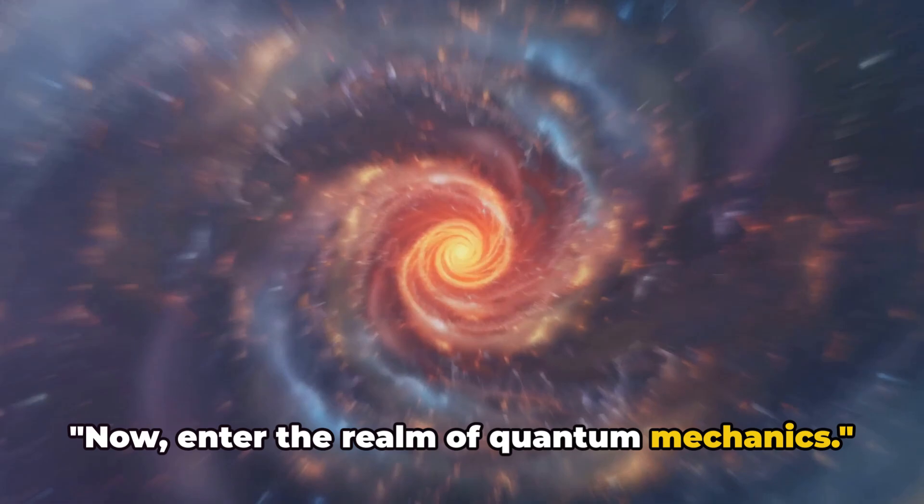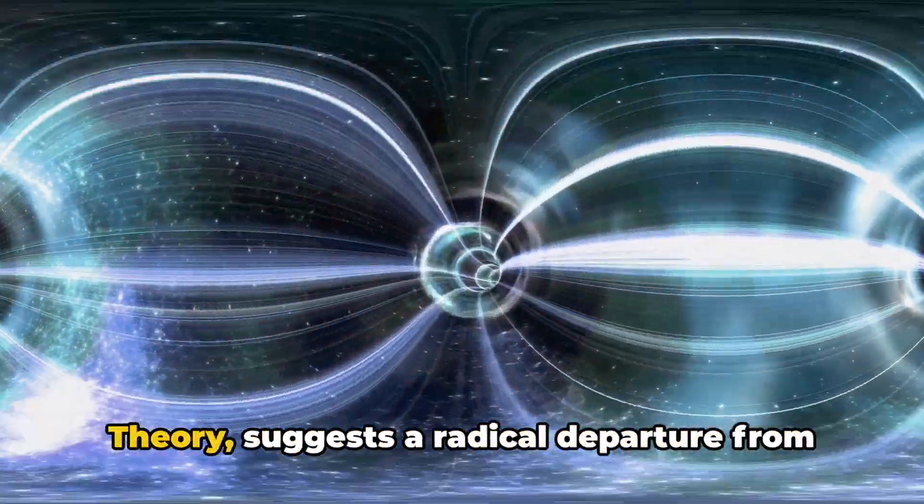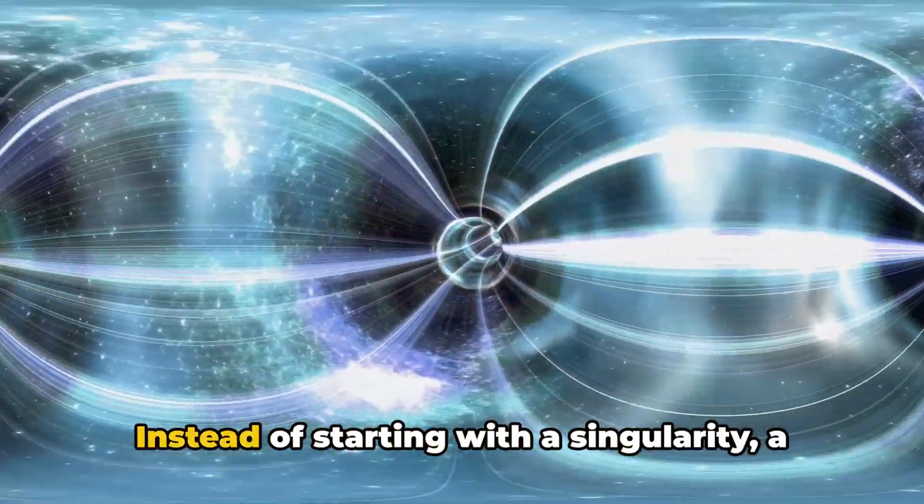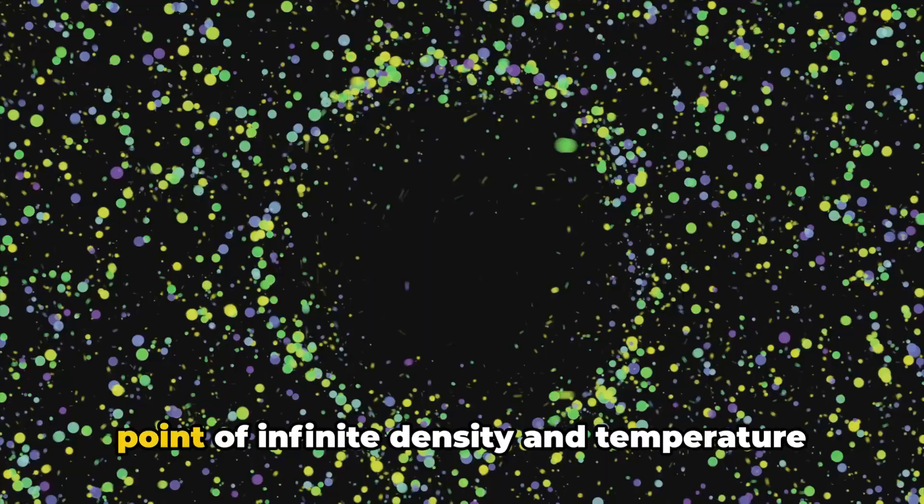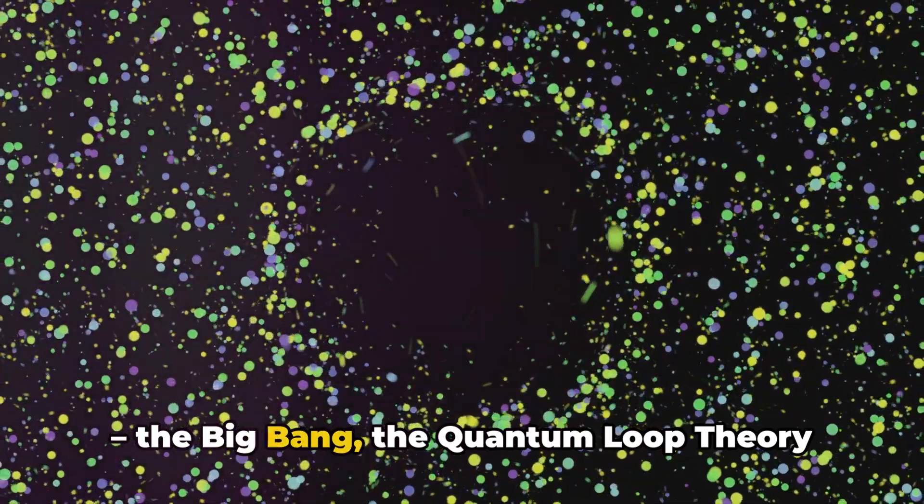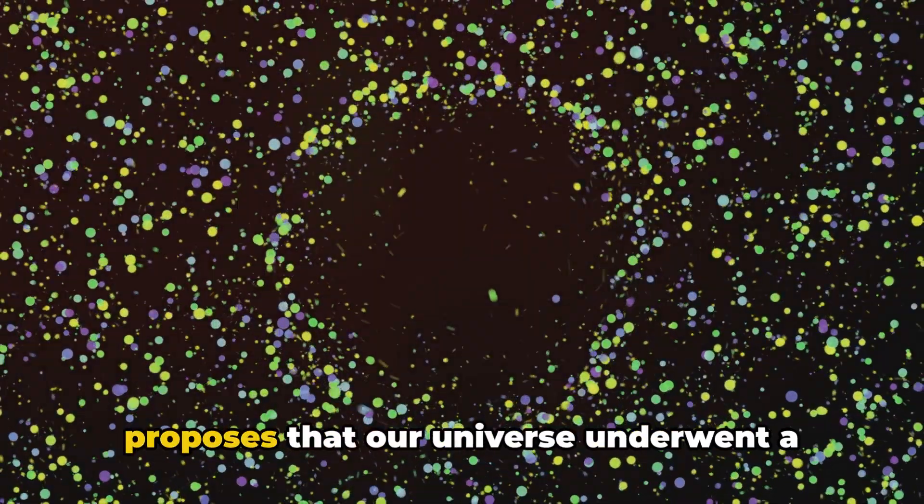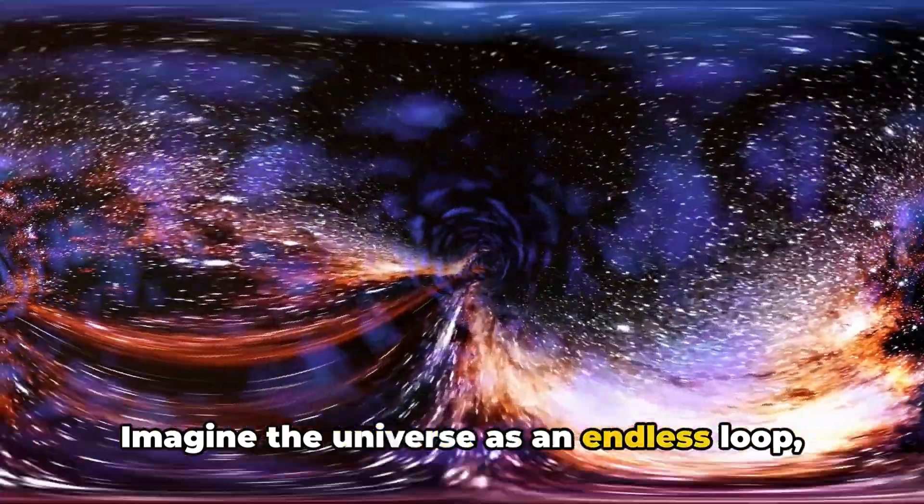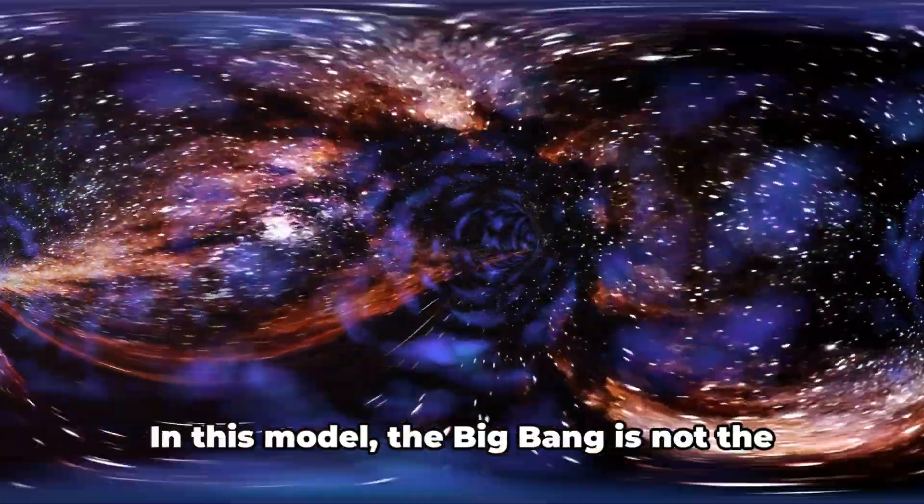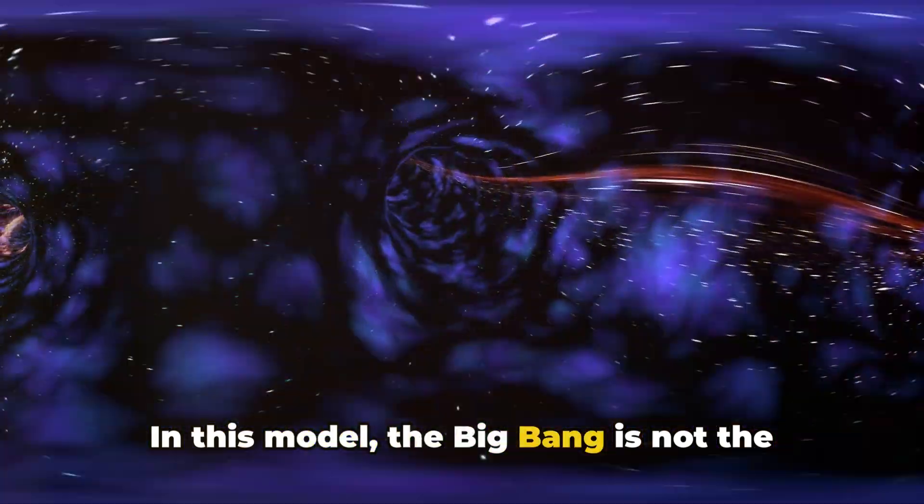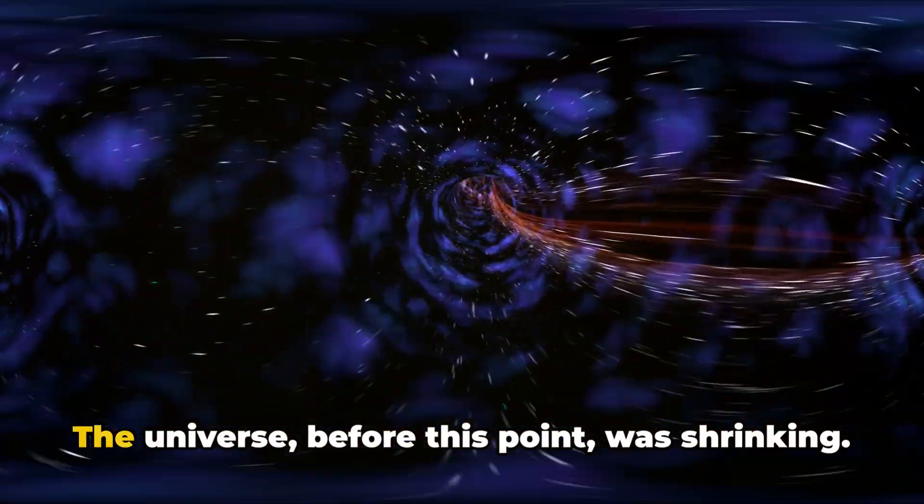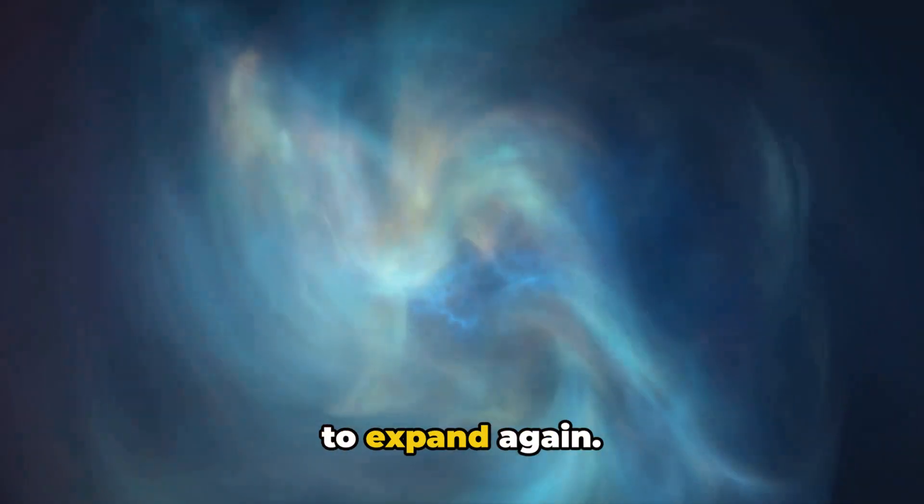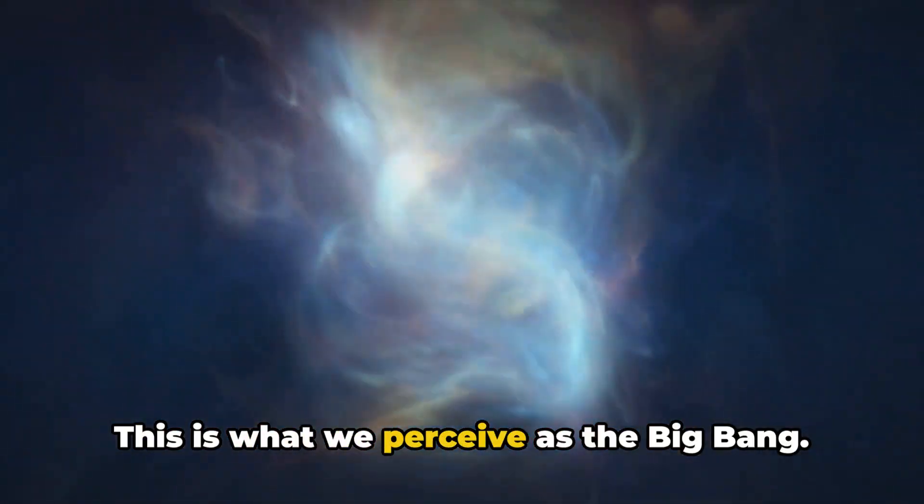Now enter the realm of quantum mechanics. Our fifth theory, the quantum loop theory, suggests a radical departure from traditional views on the universe's inception. Instead of starting with a singularity, a point of infinite density and temperature, the Big Bang, the quantum loop theory proposes that our universe underwent a previous phase. Imagine the universe as an endless loop, always changing, yet forever constant. In this model, the Big Bang is not the beginning, but rather a transition point. The universe before this point was shrinking. It reached a minimum size, then started to expand again. This is what we perceive as the Big Bang.